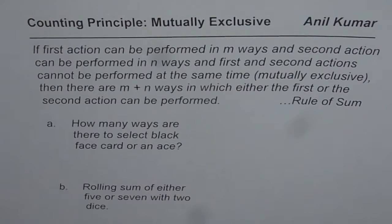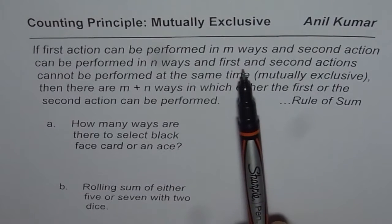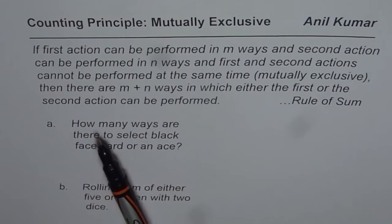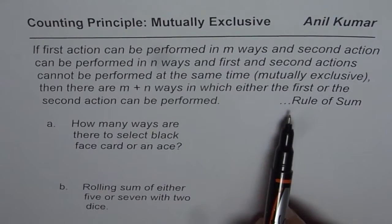Here is the definition. If the first action can be performed in M ways and the second action can be performed in N ways, and the first and second actions cannot be performed at the same time — that is to say they are mutually exclusive — then there are M plus N ways in which either the first or the second action can be performed. That is the rule of sum.